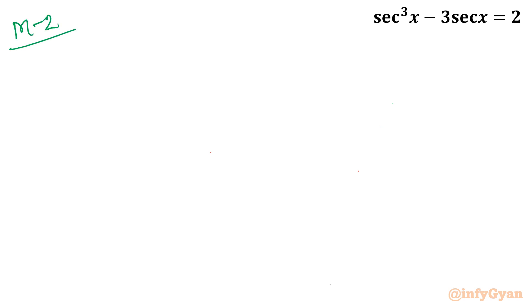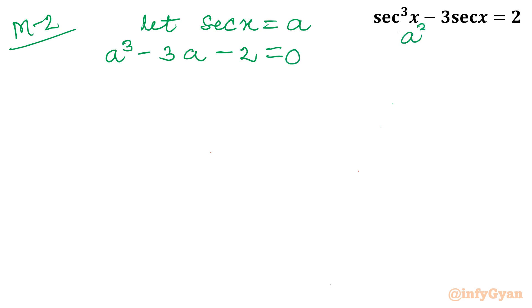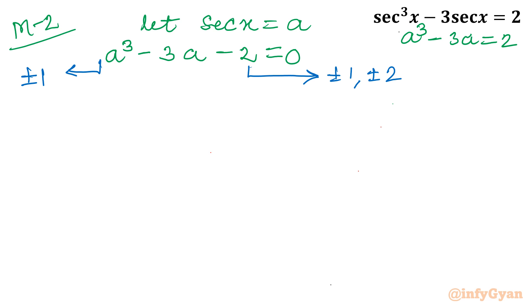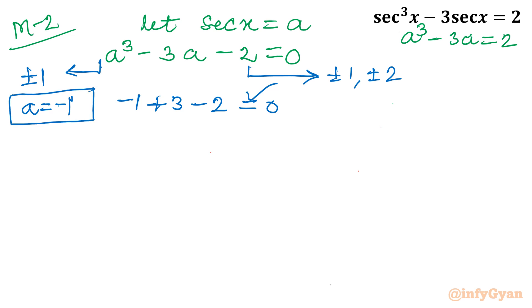Method 2 uses substitution. Let sec x = a, so the equation becomes a³ − 3a − 2 = 0. Using the rational root theorem, the possible rational roots are ±1, ±2. Testing a = 1: not a solution. Testing a = −1: (−1)³ − 3(−1) − 2 = −1 + 3 − 2 = 0. Yes, so a = −1 is a root.